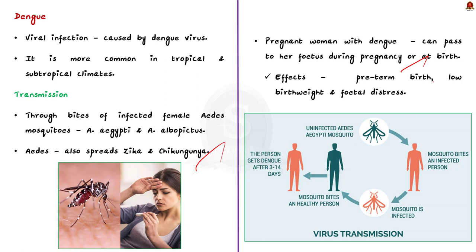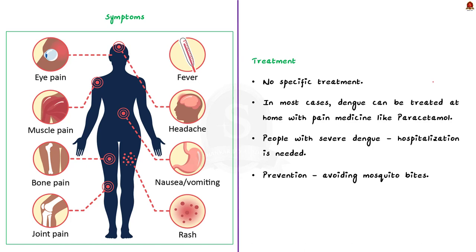Most people infected with dengue will have mild or no symptoms and will get better in 1 to 2 weeks. If symptoms occur, they usually begin 4 to 10 days after infection and last for 2 to 7 days. Common symptoms may include high fever, severe headache, pain behind the eyes, muscle and joint pain, vomiting, and rash. Sometimes dengue can be severe and lead to death. Individuals infected for the second time are at greater risk of severe dengue. Symptoms of severe dengue include severe abdominal pain, persistent vomiting, rapid breathing, restlessness, and being very thirsty.